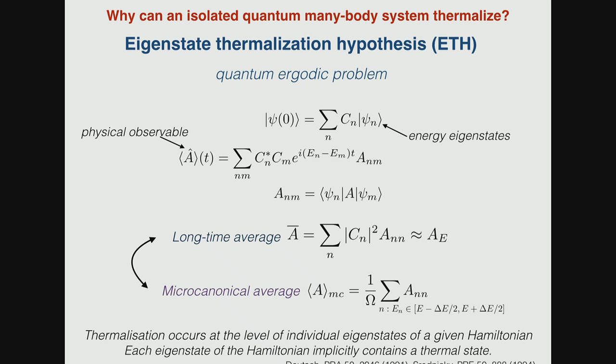Then there is a question: why is it possible, even independent of statistics? These experiments are in cold bosons. There are several ideas on the market for why it's possible, and one of them is referred to as ETH, which has nothing to do with Zurich, but means eigenstate thermalization hypothesis.